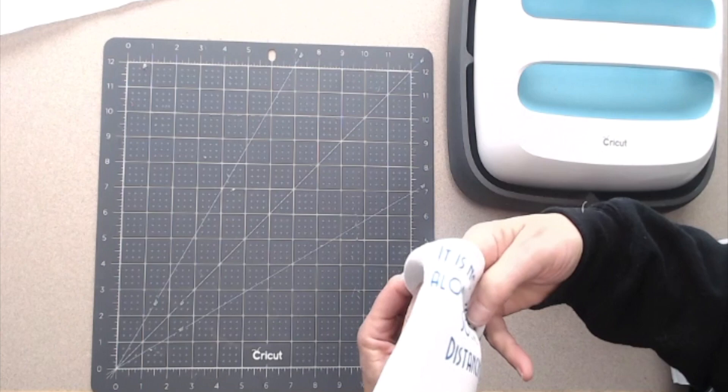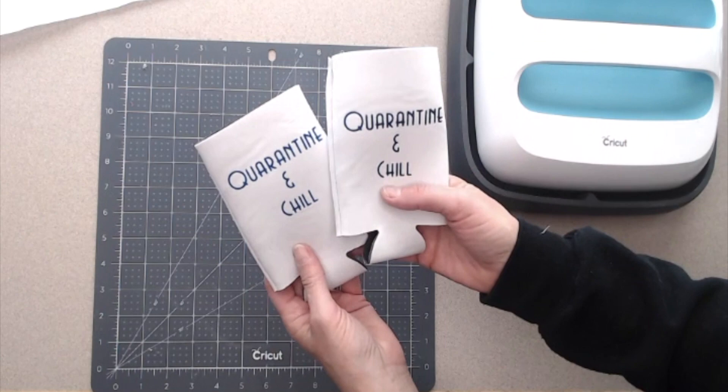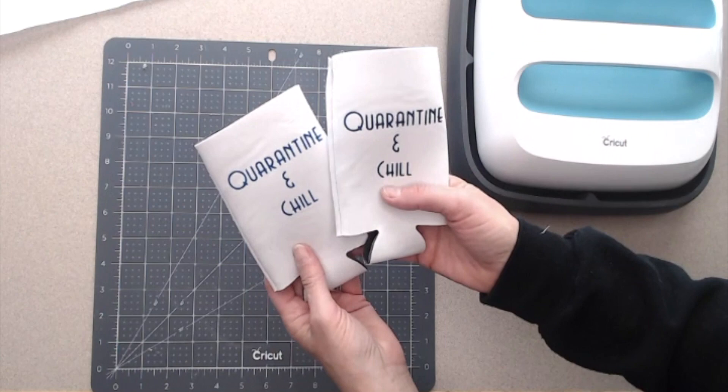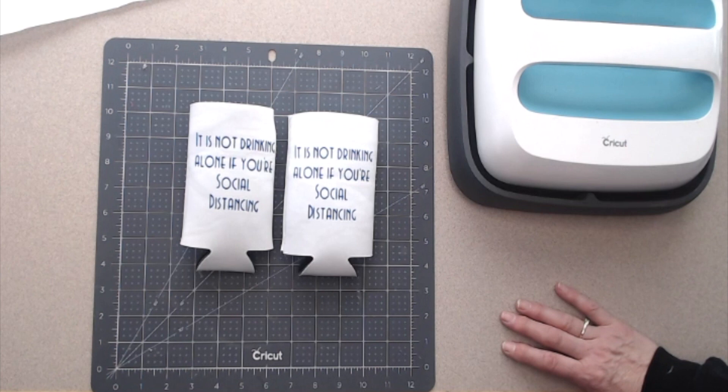And there we have it. Now I've got a set of two koozies with this cute little saying on it, ready to go sit out on my patio and enjoy my koozies with a refreshing drink. So I hope you like this tutorial on using infusible ink, and I will definitely share with you the website that I've been getting my blanks from. Thanks so much for joining me for another Inspiration Friday.